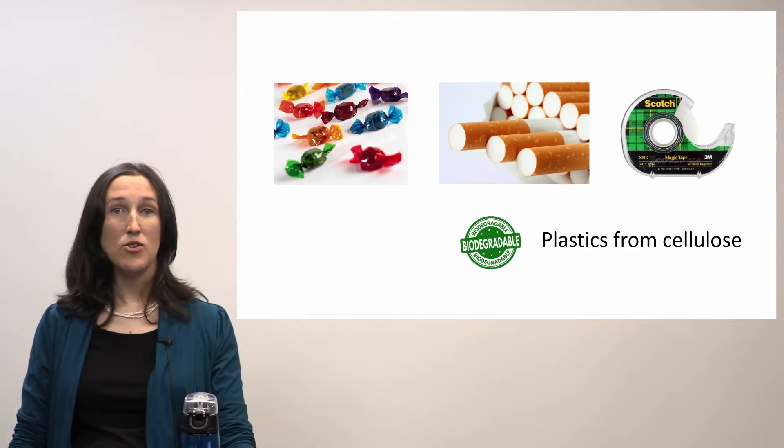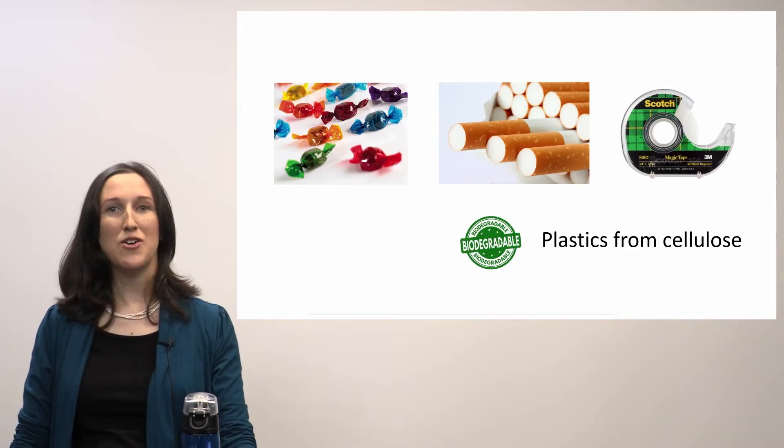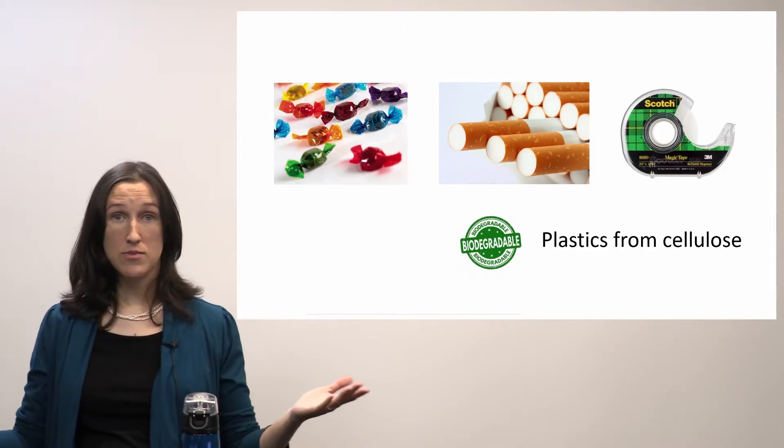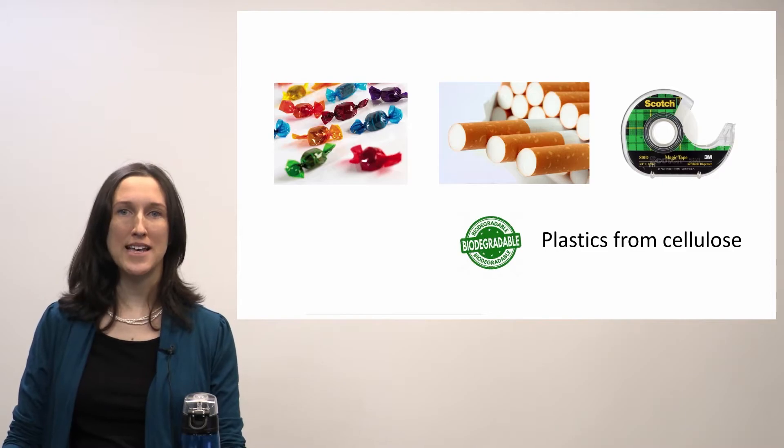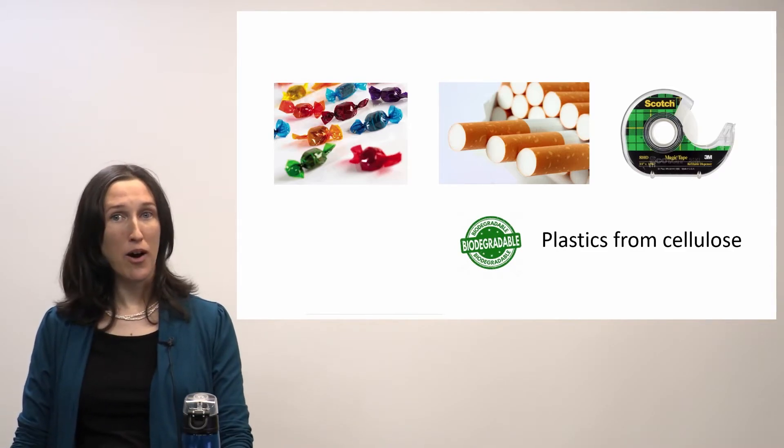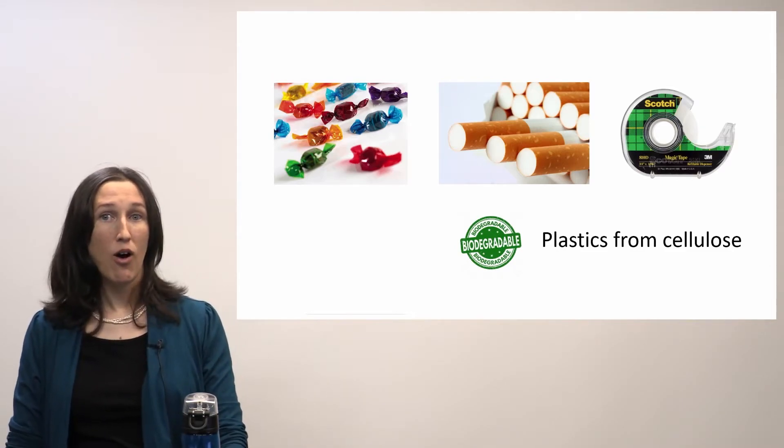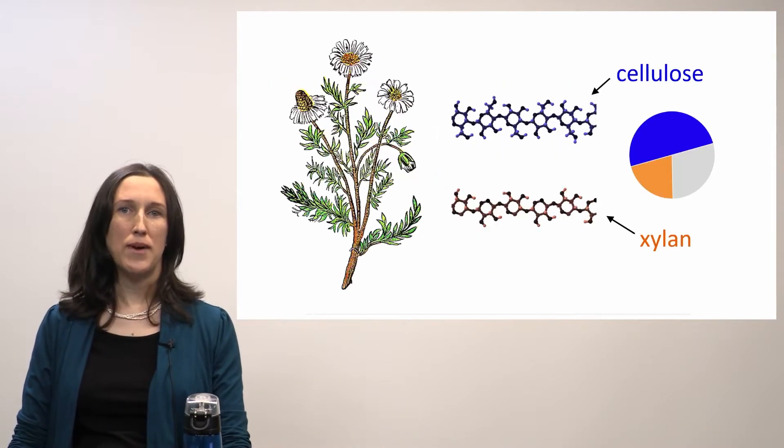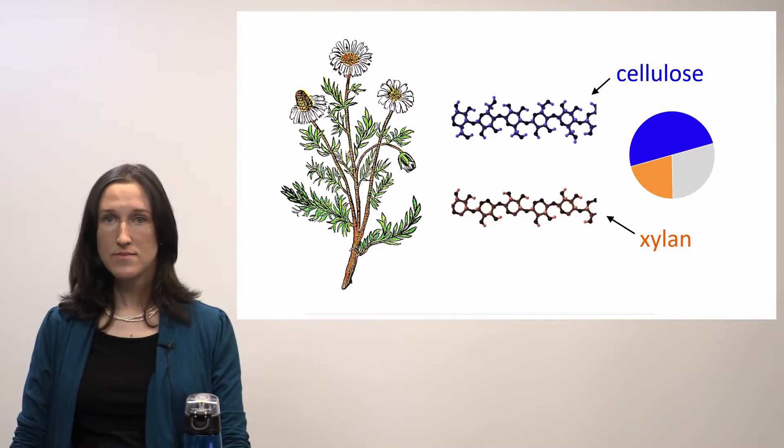Turns out cellulose makes excellent plastics already. The cellophane you see making up the candy wrappers, cigarette filters, scotch tape—all prime examples of what you can make when you modify cellulose. And all three of these are biodegradable to some degree. So what about the other polymer I mentioned, xylan?